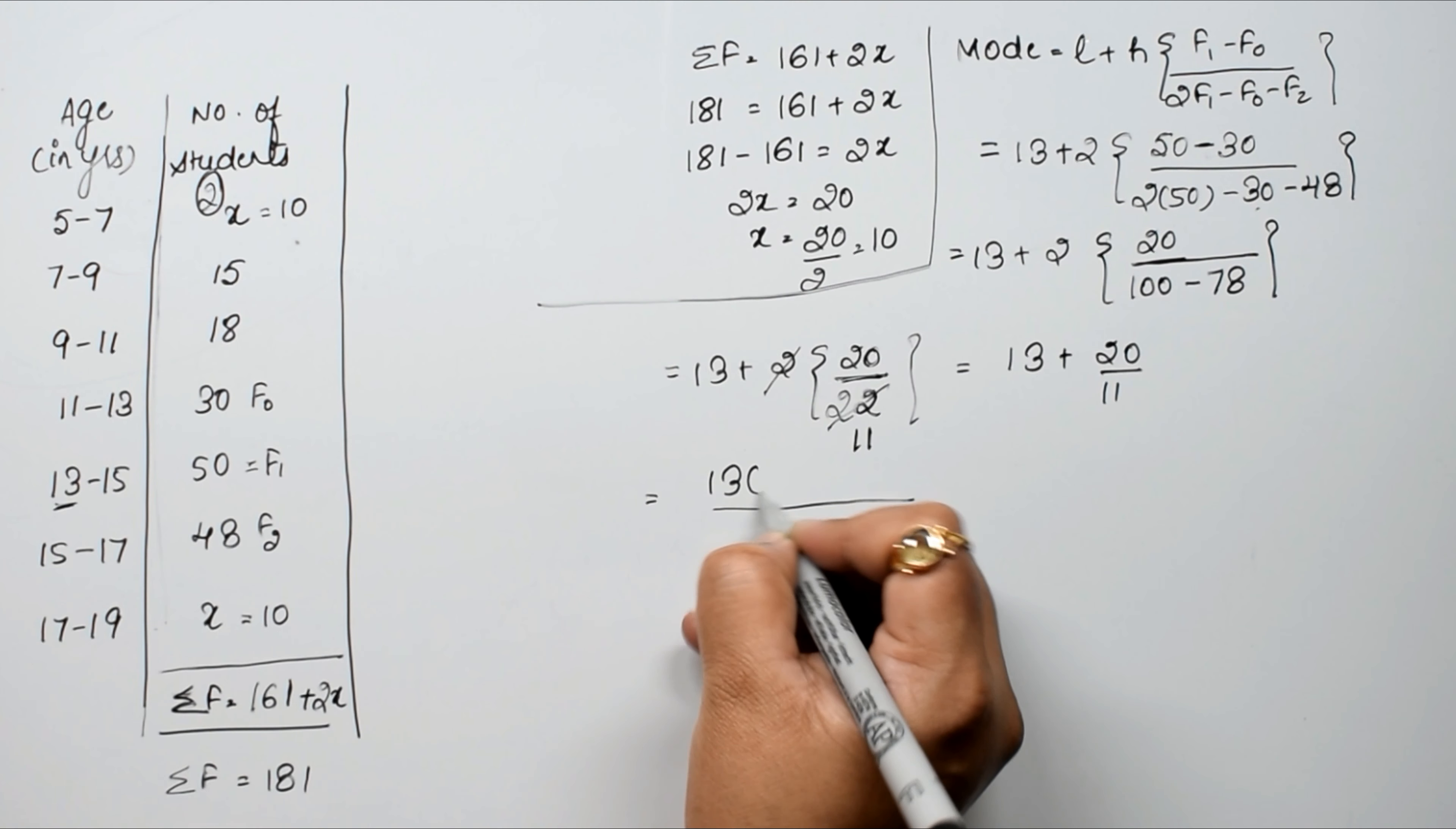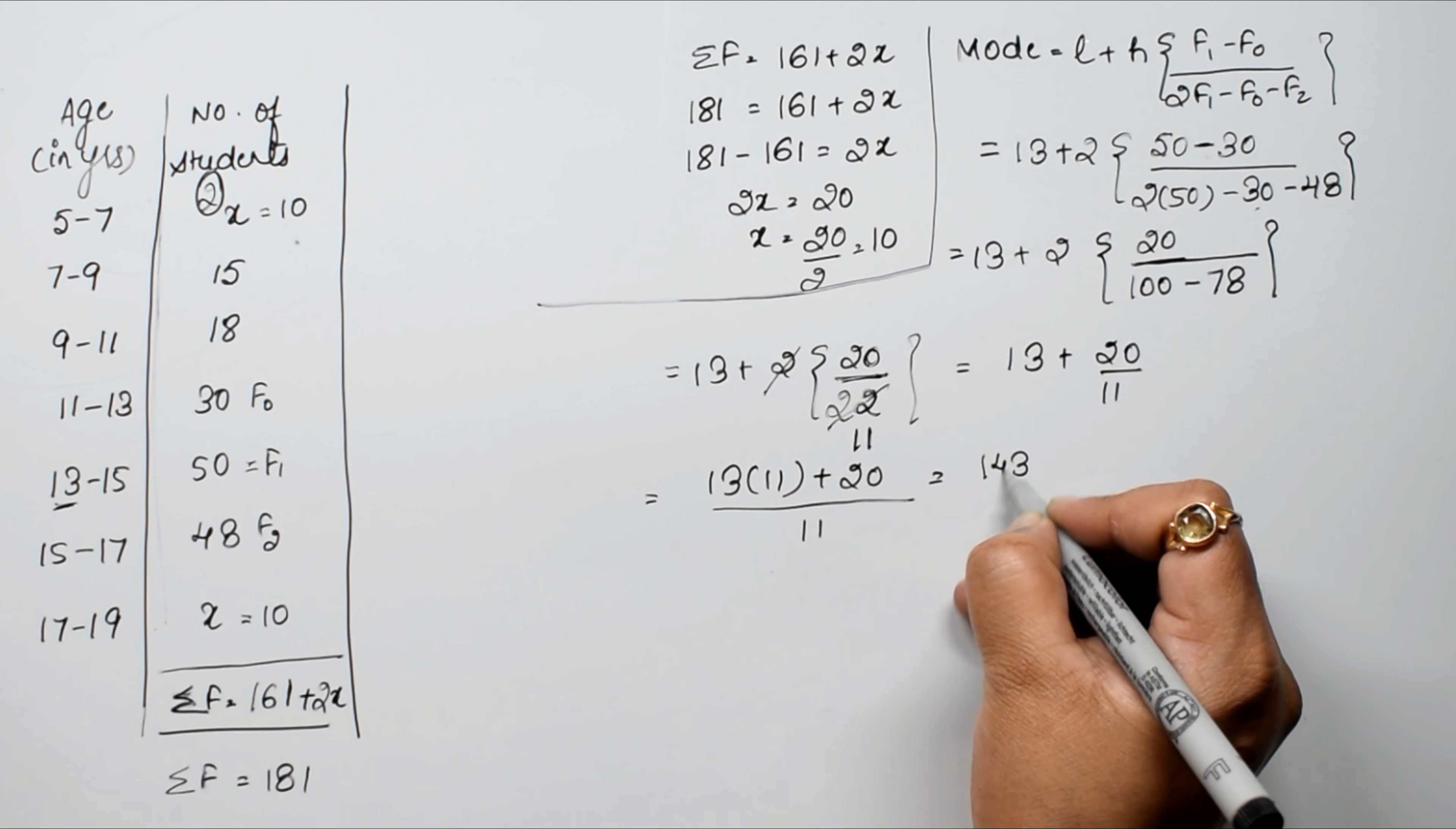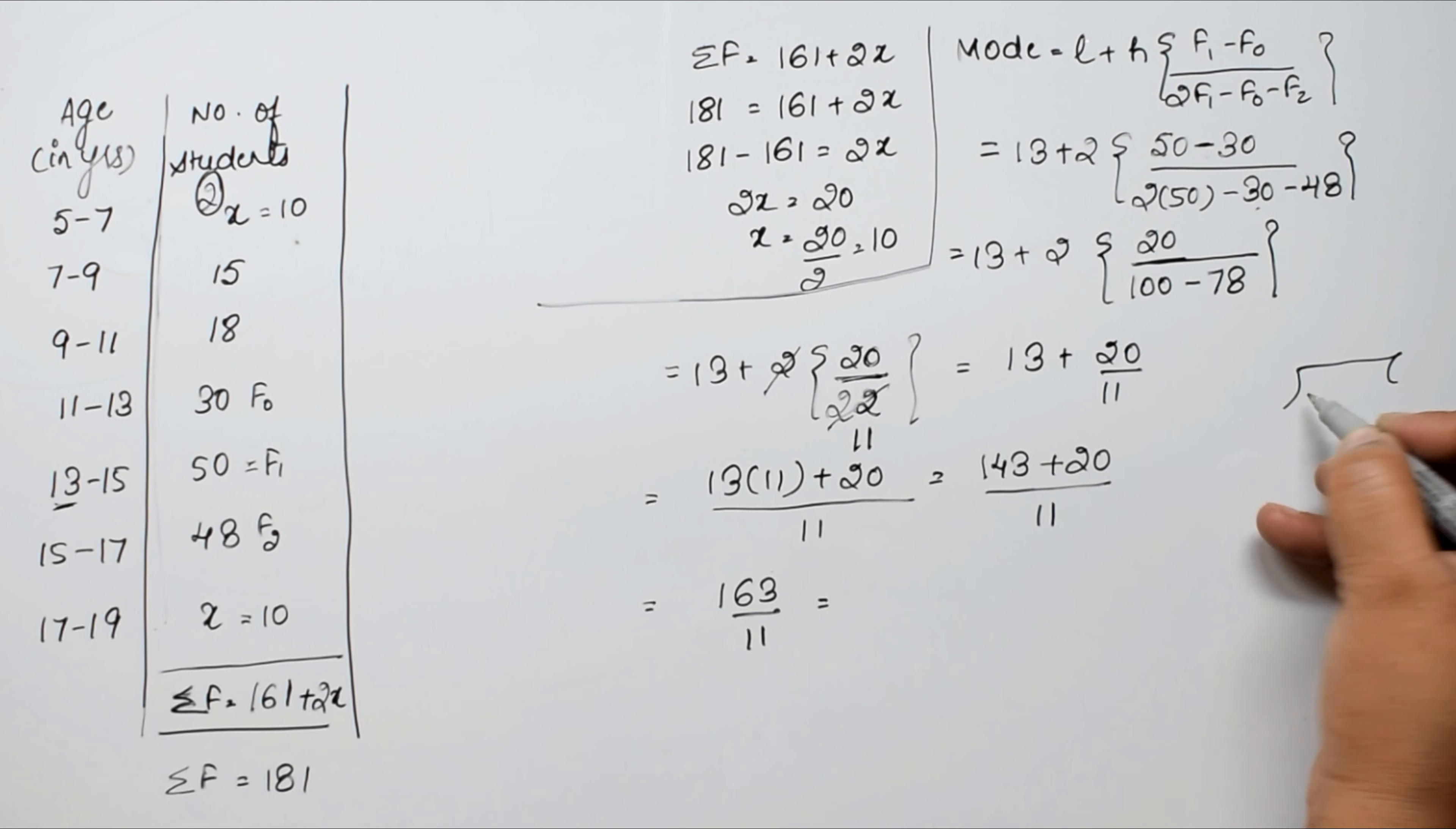LCM is 11. So this is 13 into 11 plus 20, all upon 11. 13 times 11 is 13, carry 1, 13 plus 1 is 14. So 143 plus 20 upon 11, which equals 163 upon 11.